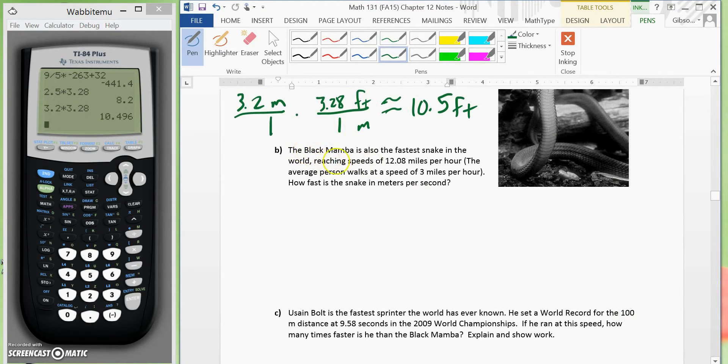Okay, now B, the black mamba is also the fastest snake in the world, reaching speeds of 12.08 miles per hour. The average person walks at a speed of 3 miles per hour. How fast is the snake in meters per second?